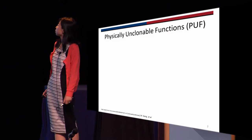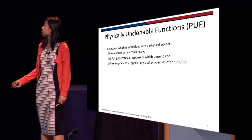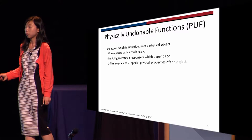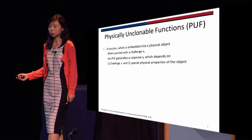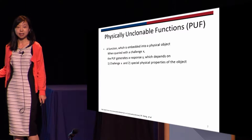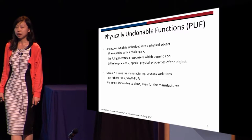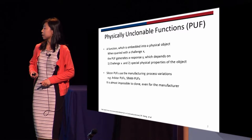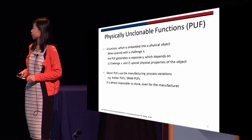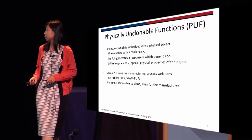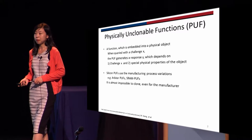As you see from the previous two talks, physically unclonable functions are a physical function which, embedded in a physical object, when queried with a challenge X will generate a response Y, which depends on the challenge X and the physical properties of the object. There are many different kinds of PUFs; one of them is silicon PUFs, which use variation in the fabrication process — for example, the ARBITER PUFs and SRAM PUFs.